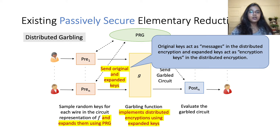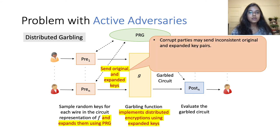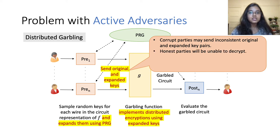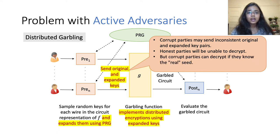The original keys in this distributed encryption act as messages and the expanded keys act as encryption keys. While this reduction achieves privacy against passive adversaries, it fails to achieve full security against active adversaries. This is because an active adversary may send inconsistent original and expanded key pairs to the function G. Since G is independent of the PRG, it will be unable to detect such inconsistencies and will proceed to implement the distributed encryption normally. Upon receiving the garbled circuit, the honest parties will be unable to evaluate it because they are unaware of the new mapping between the original and expanded keys. But the corrupt parties who are aware of this mapping can still evaluate the garbled circuit and obtain the output, so this protocol does not achieve fairness or full security.